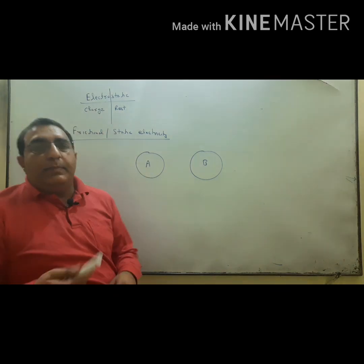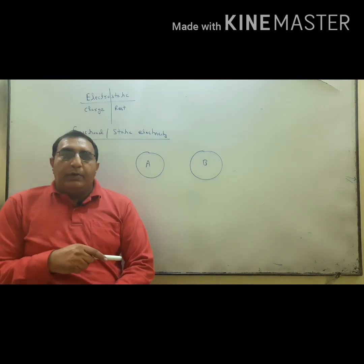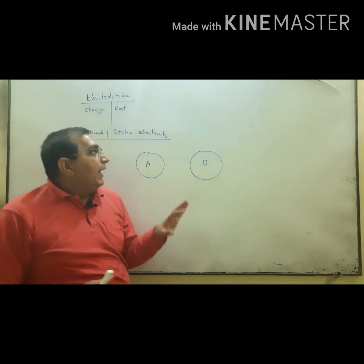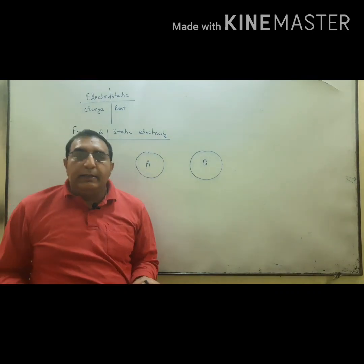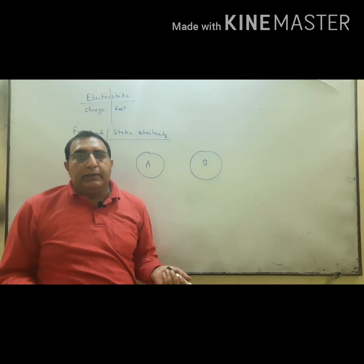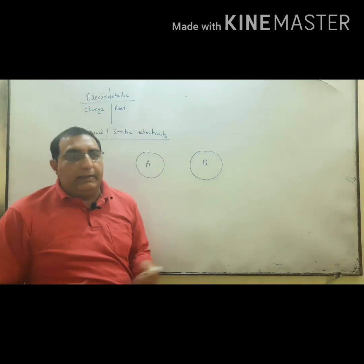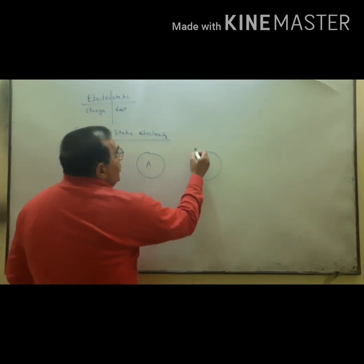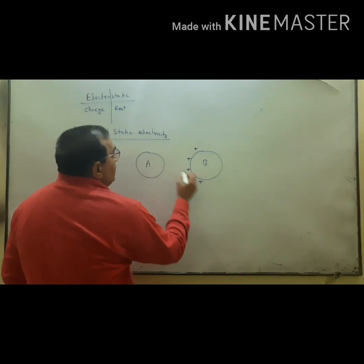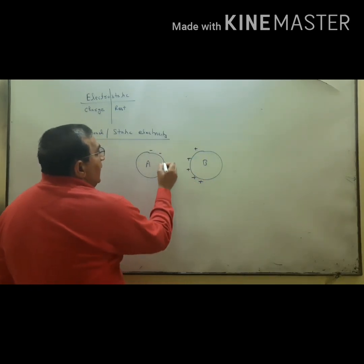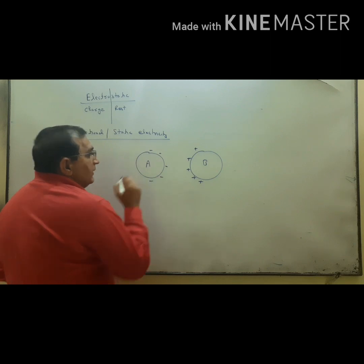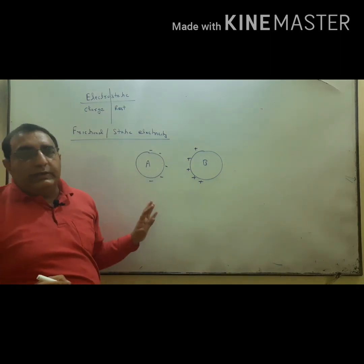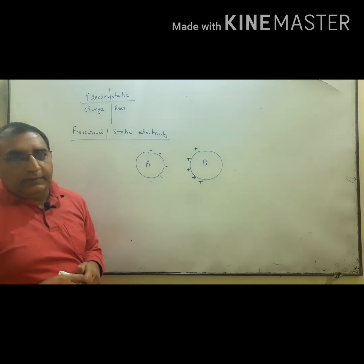When we rub a body with another body, charges are produced on that body. These charges are static in nature, hence electricity is called static electricity. On rubbing, suppose B has positive charge and A has negative charge, and electricity due to these charges is called static electricity.